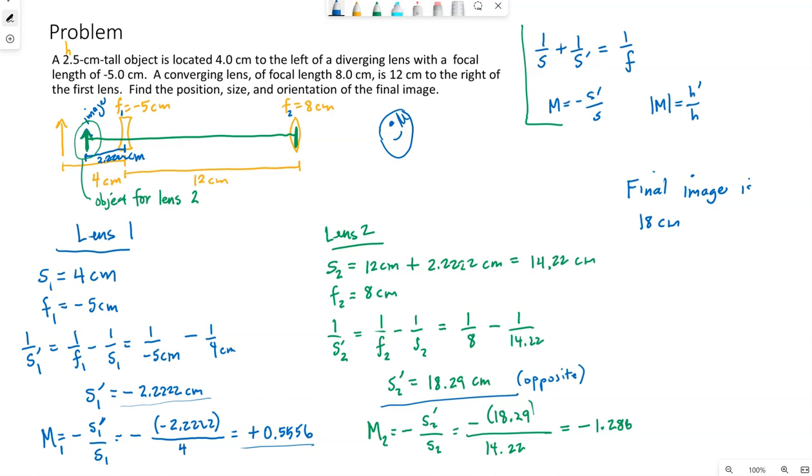So in our picture and from the wording of our problem the original object is on the left side. So this final image is 18 centimeters to the right of the converging lens. So back here 18 centimeters.